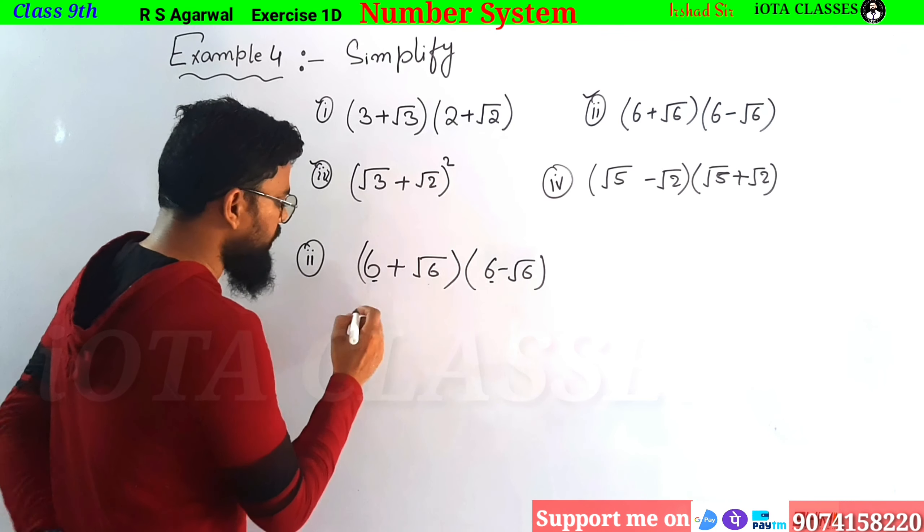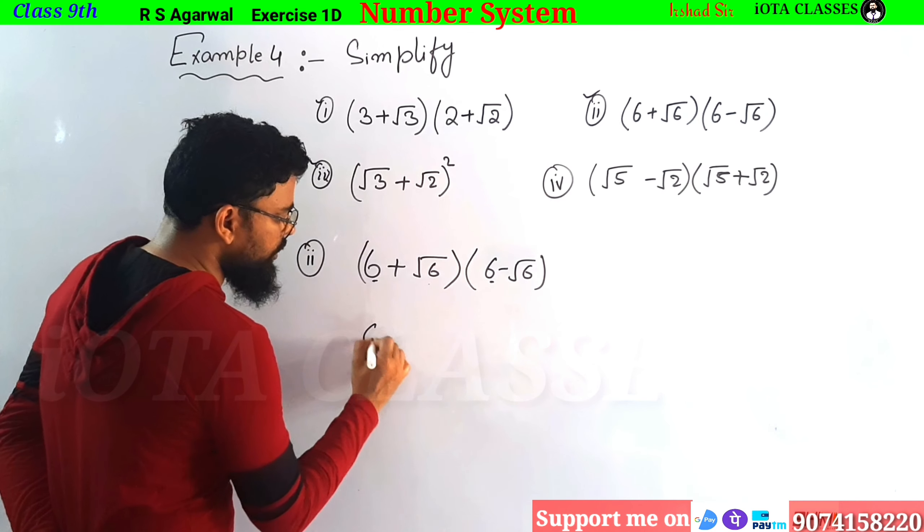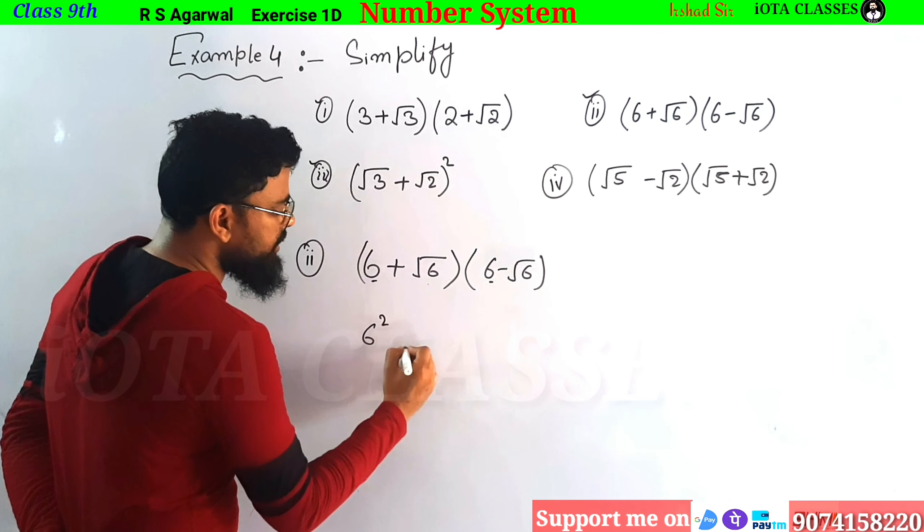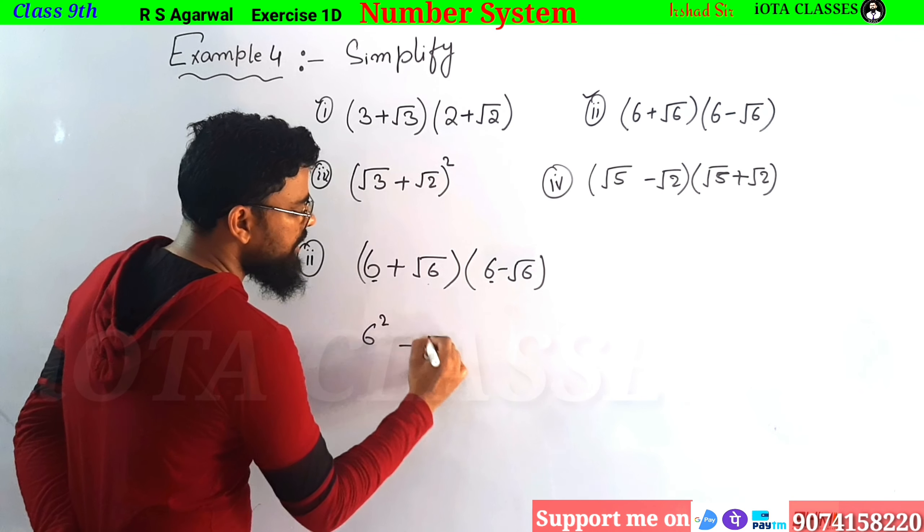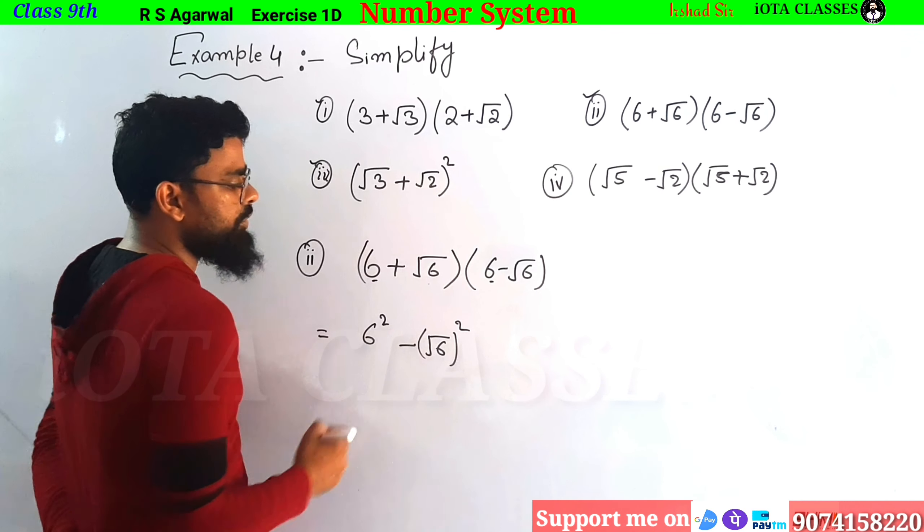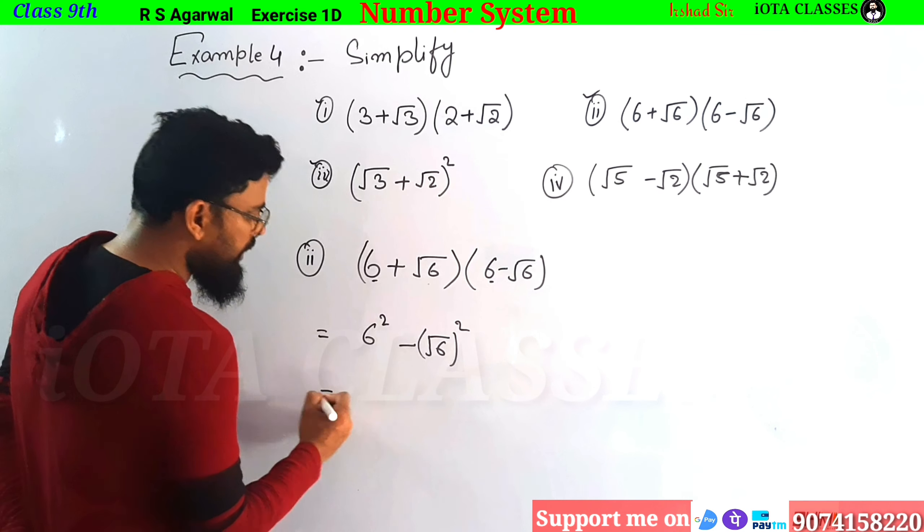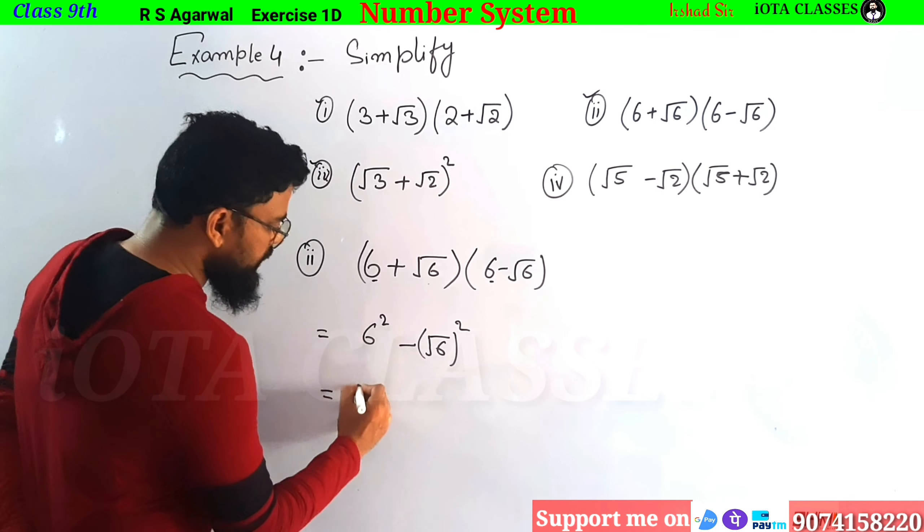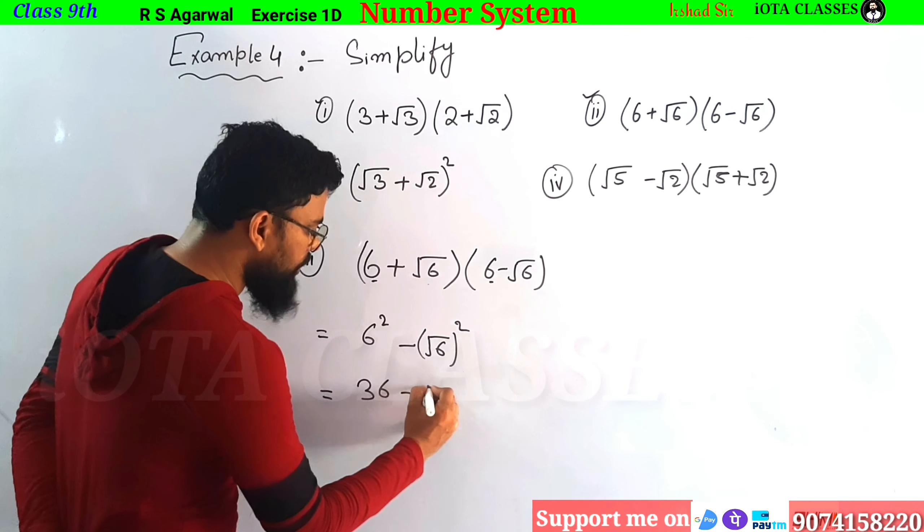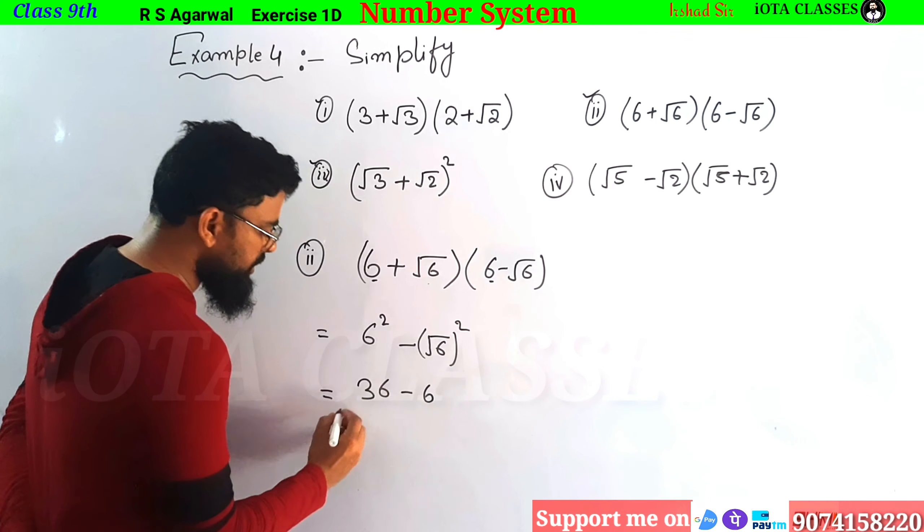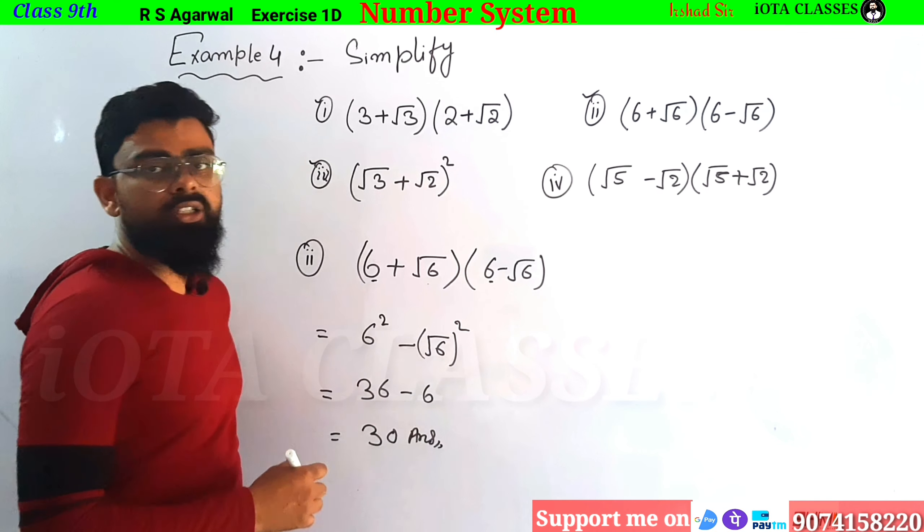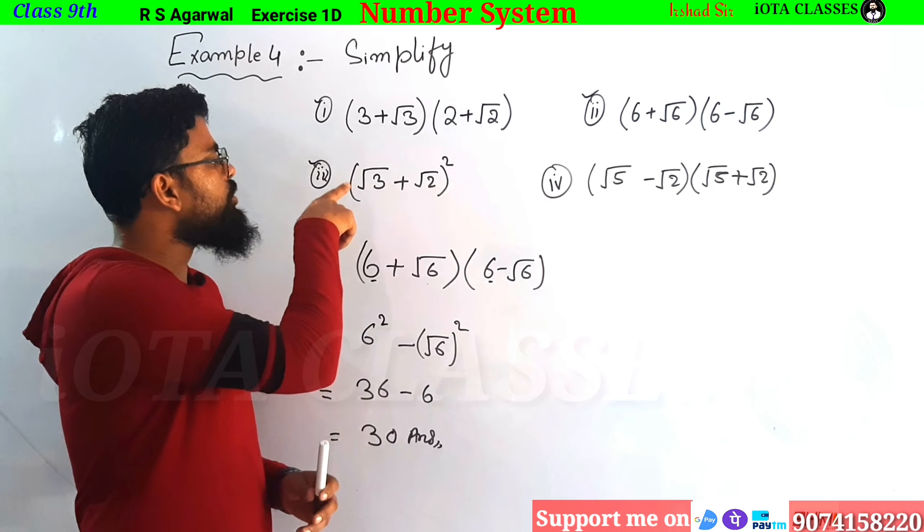The formula is A plus B into A minus B. The formula says A square minus B square. The formula here will be A square. A square is 6 squared. Now this is A, root 6. So this is root 6. 6 square, A square minus B, the formula A plus B into A minus B. Now what do we do? 6 square is 36 minus, and root 6 square is 6. So this is our 6. So 36 minus 6 is our 30. So 30 is our answer.